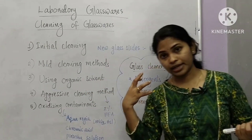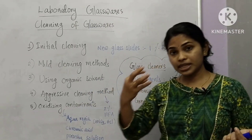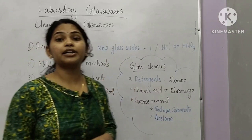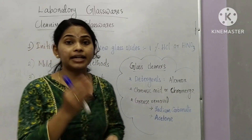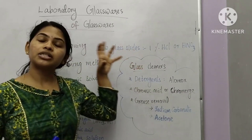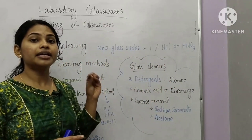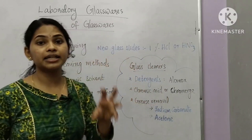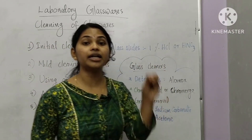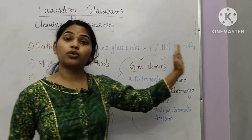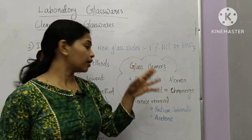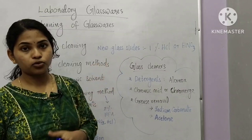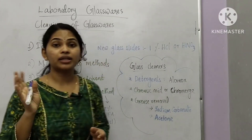To remove contaminants from glassware, we can use water and detergent — detergent is a great glass cleaning agent. An important example of a glass cleaner is Alkonox. Another cleaning agent is chromic acid.